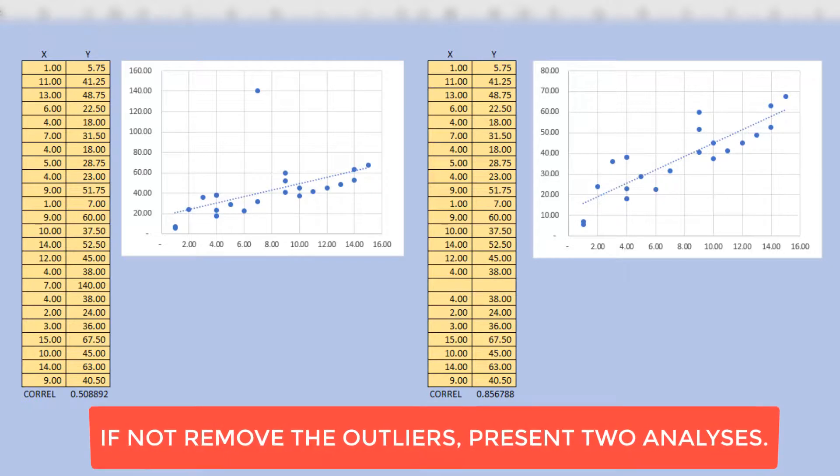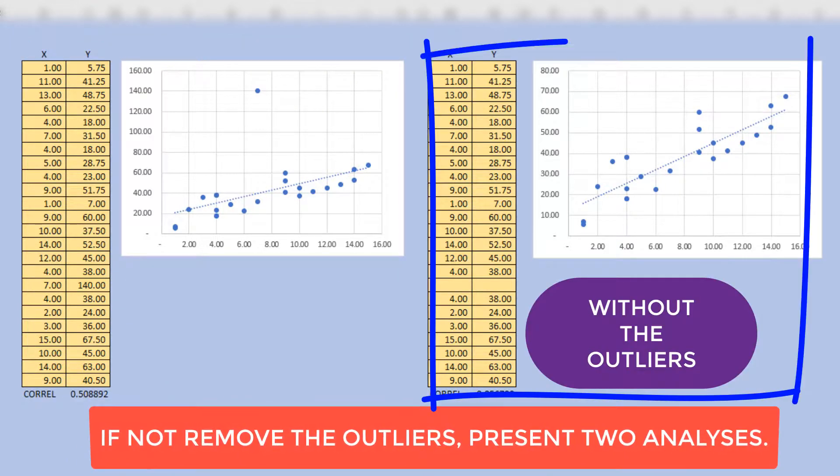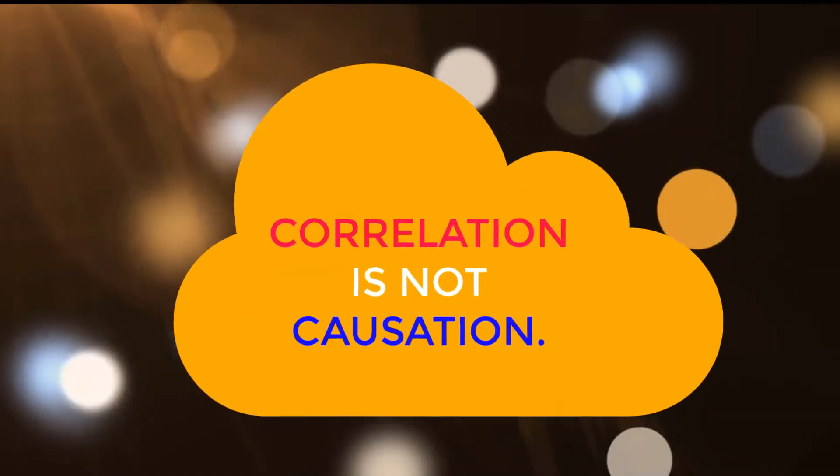The best practice is to publish the two analyses, one with the outliers and the other without the outliers. Being transparent in your report is a great way to make sure that you have a reliable analysis.